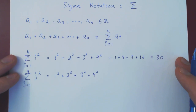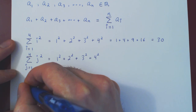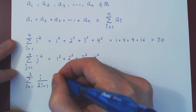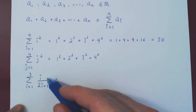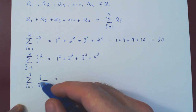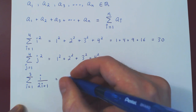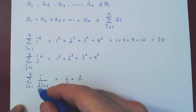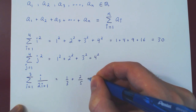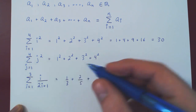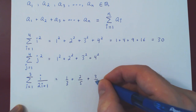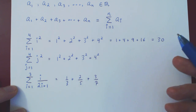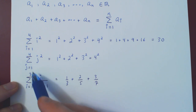Let's look at one more example. What if I sum i/(2i+1) as i goes from 1 to 3? When i is 1, we get 1/(2·1+1) = 1/3. Plus when i is 2, we get 2/(2·2+1) = 2/5. Plus finally when i is 3, we get 3/(2·3+1) = 3/7. You could add these up as a single fraction — I'll leave that to you. The point is you're now comfortable with how to use sigma notation.